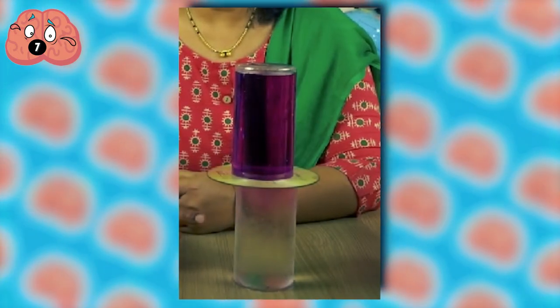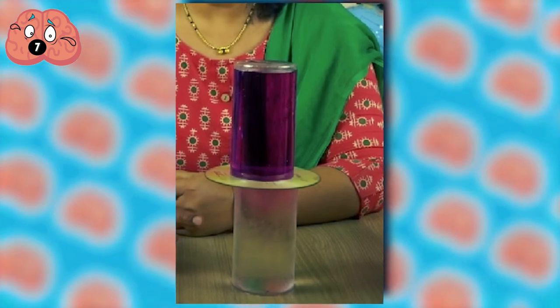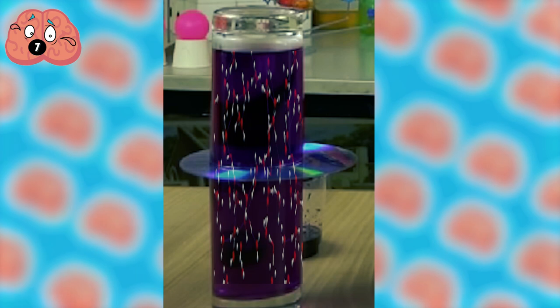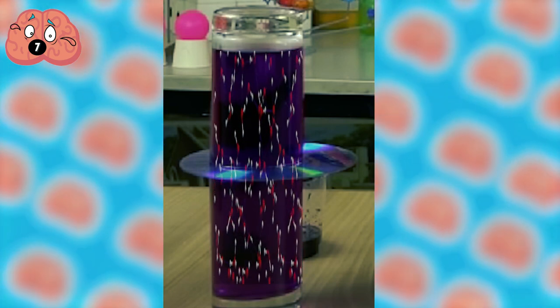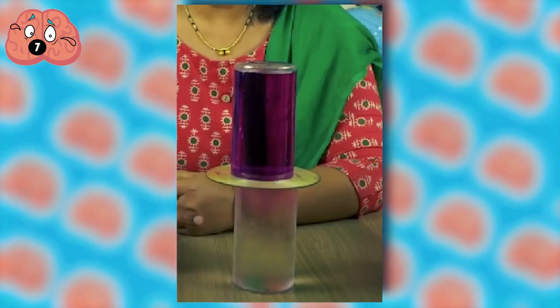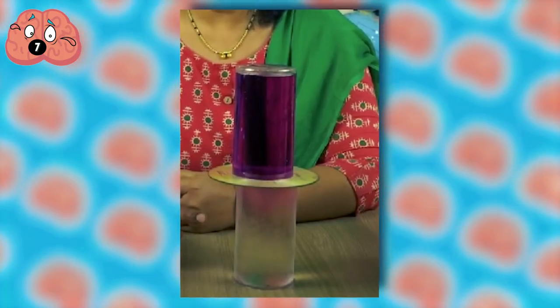They may be using different liquids, but the principle is the same: weight. The molecules in hot water move faster, and as such, it's lighter than cold water. That's how it forced its way upwards and made the colors mix. In the second experiment, water is heavier than whiskey. That's how they swap positions.